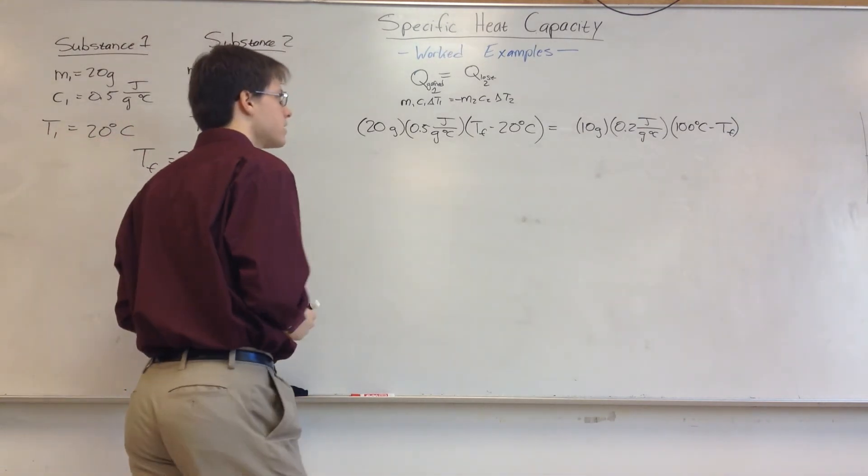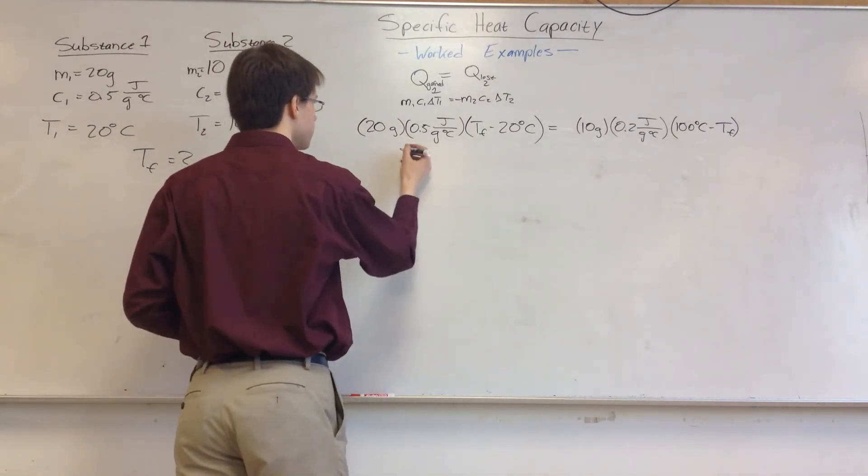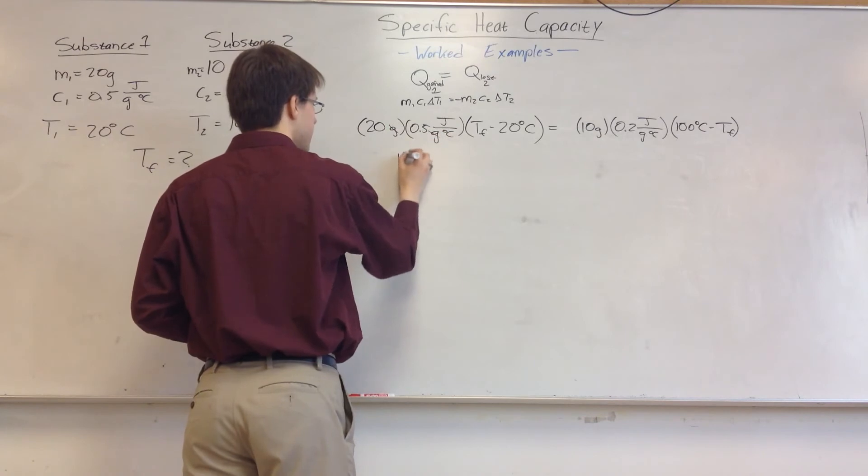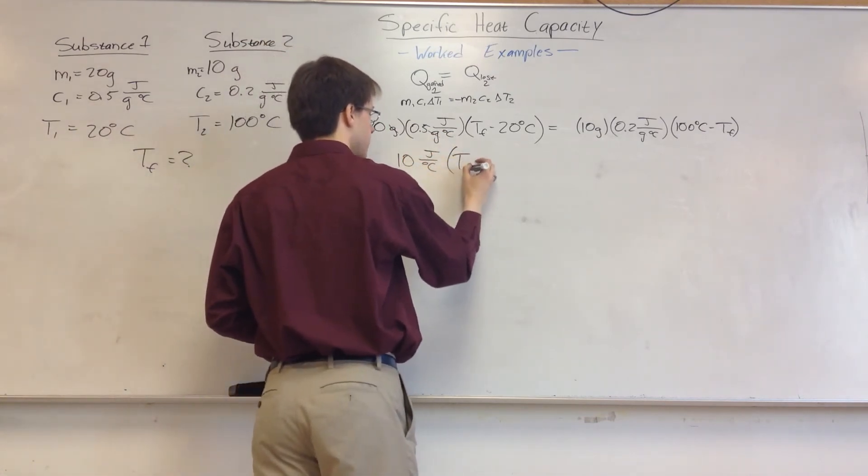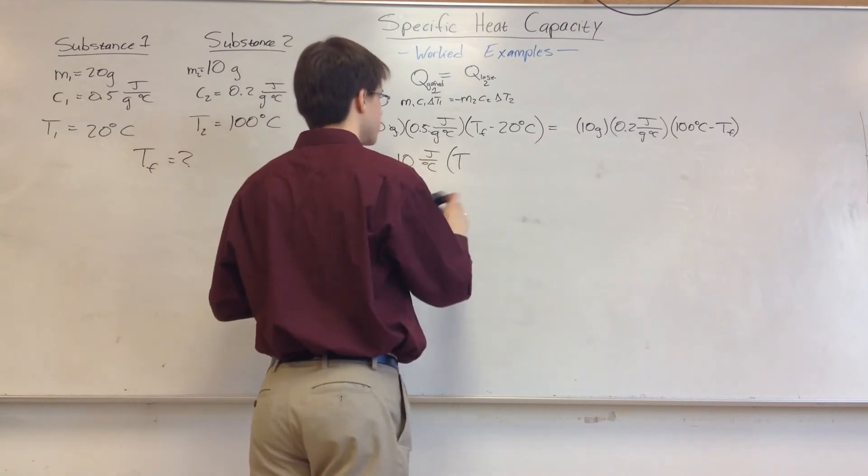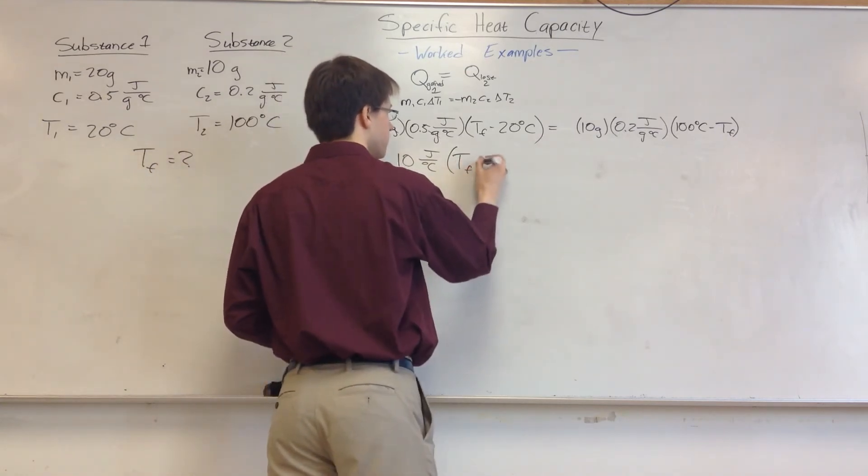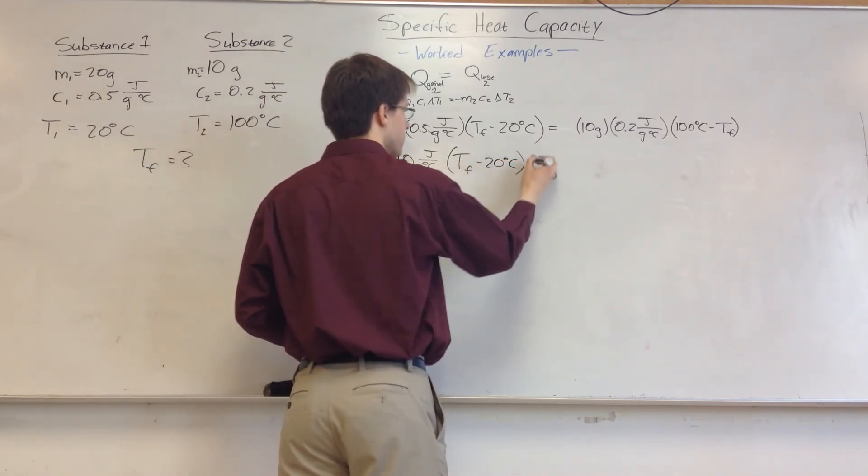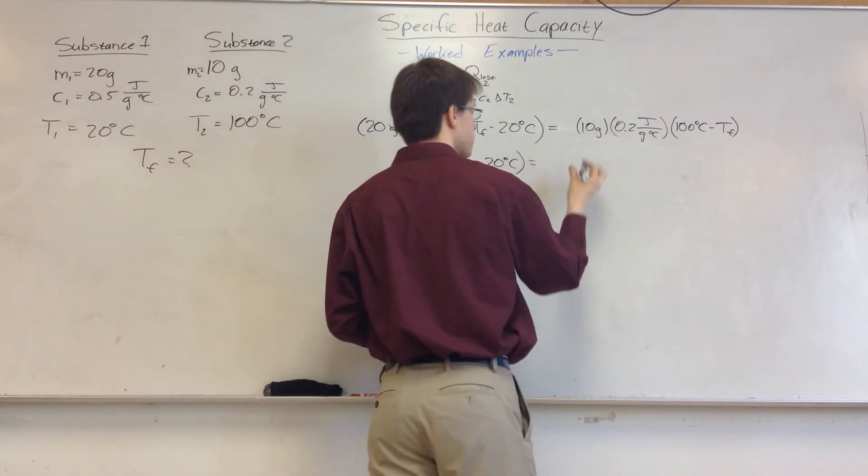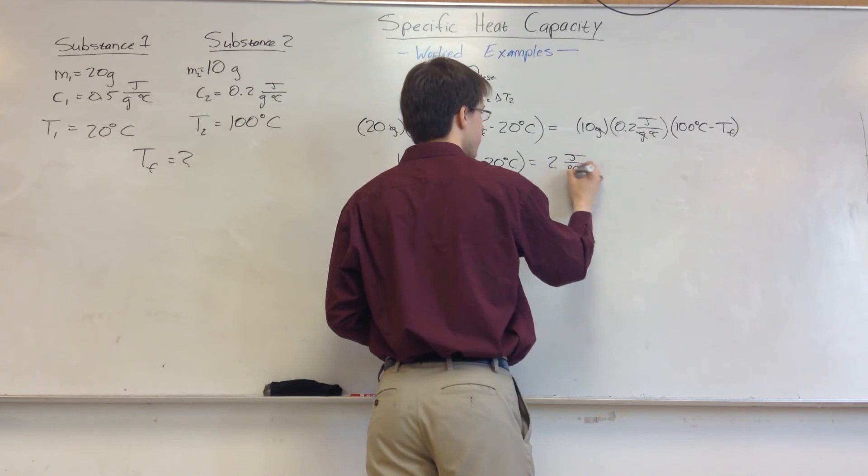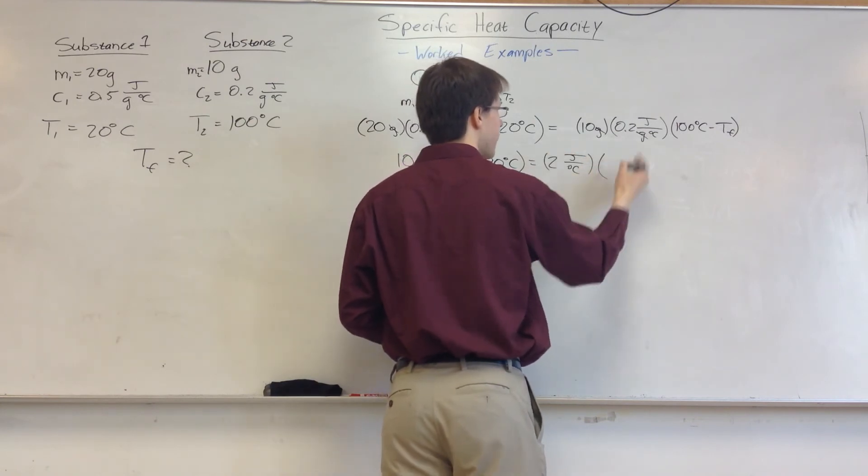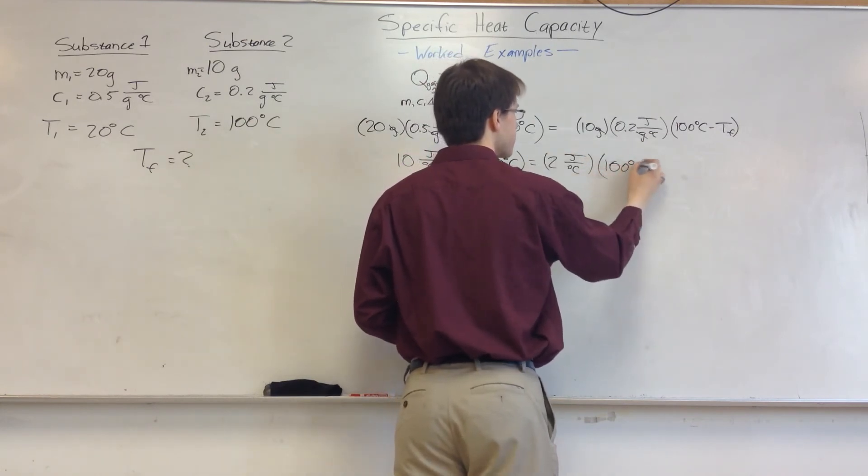So now I'm going to do some simplification here. I'm going to say 20 times 0.5. The grams cancel. I get 10 joules per degree Celsius. Times TF minus 20 degrees Celsius. And this is going to be equal to 10 grams times 0.2 is 2 joules per degree Celsius. And I have 100 degrees Celsius minus TF.